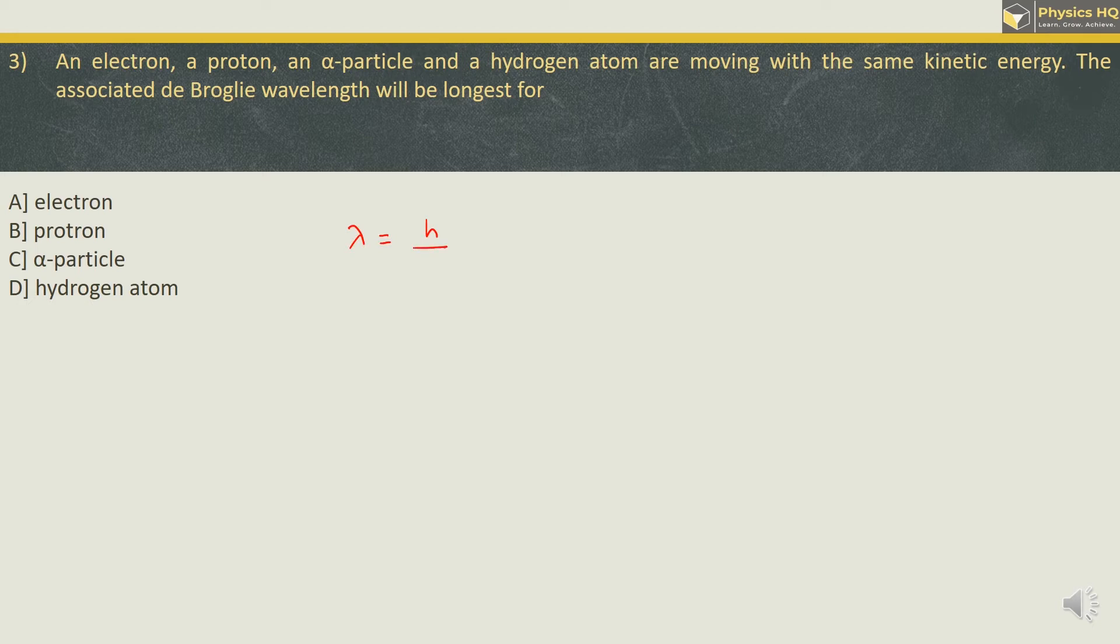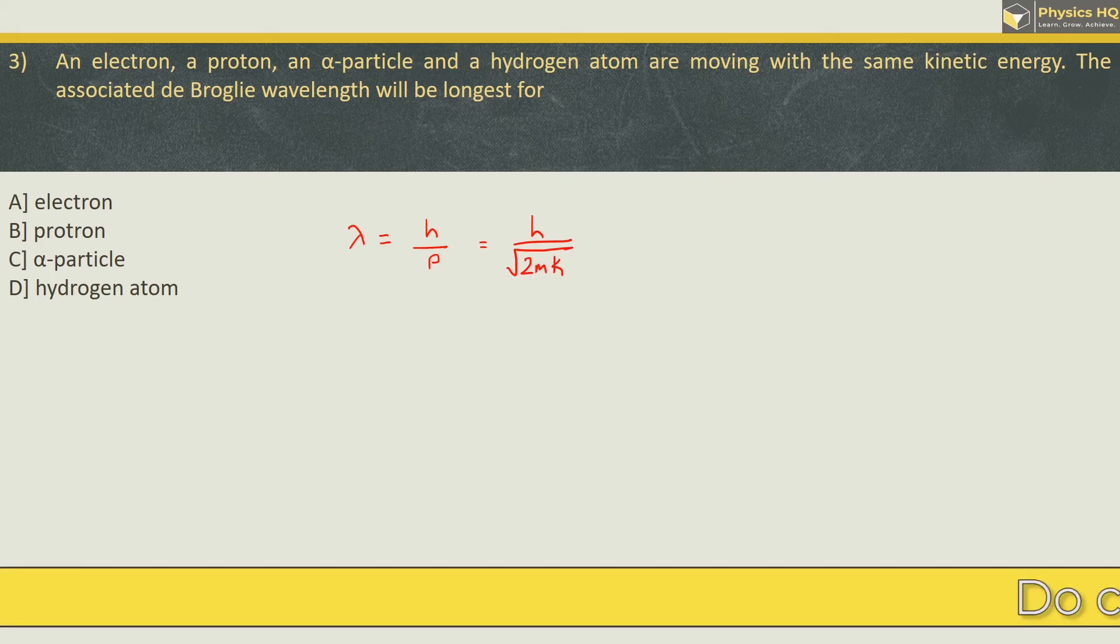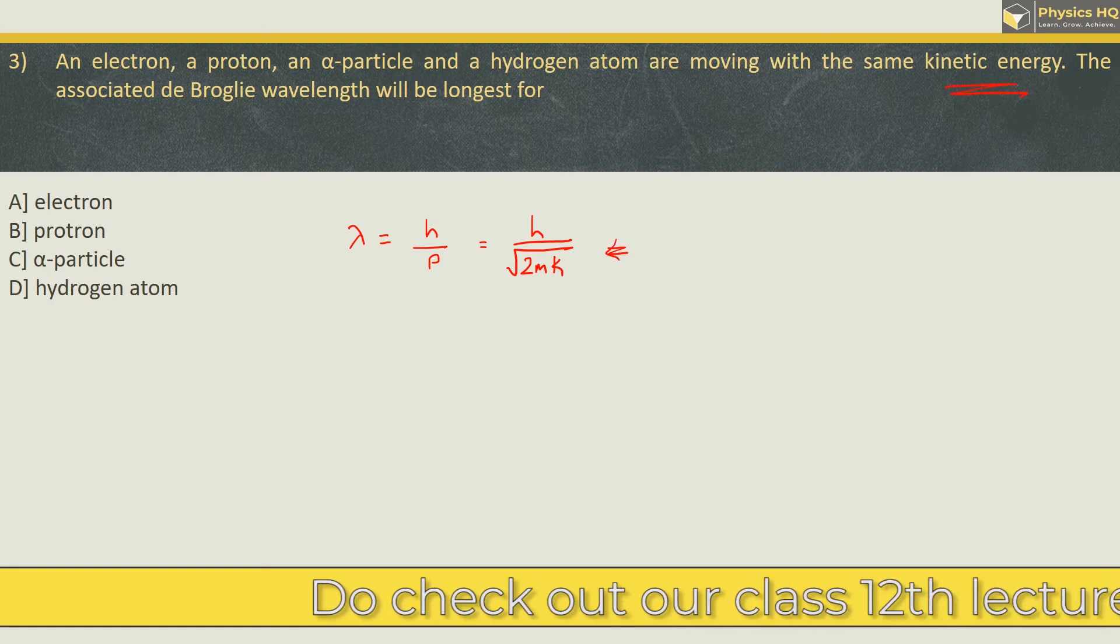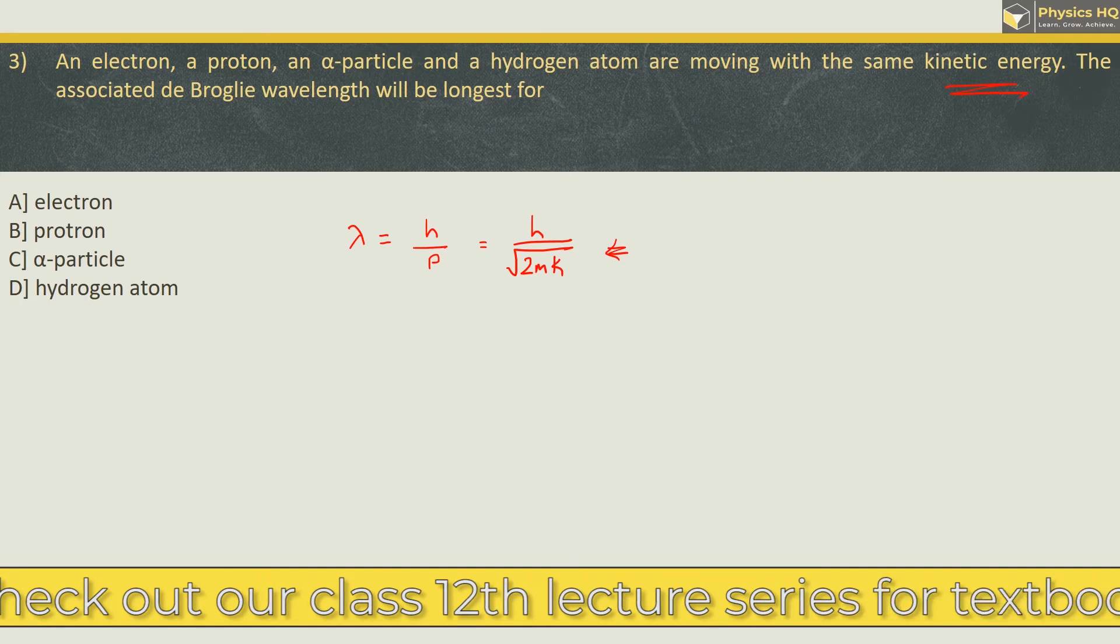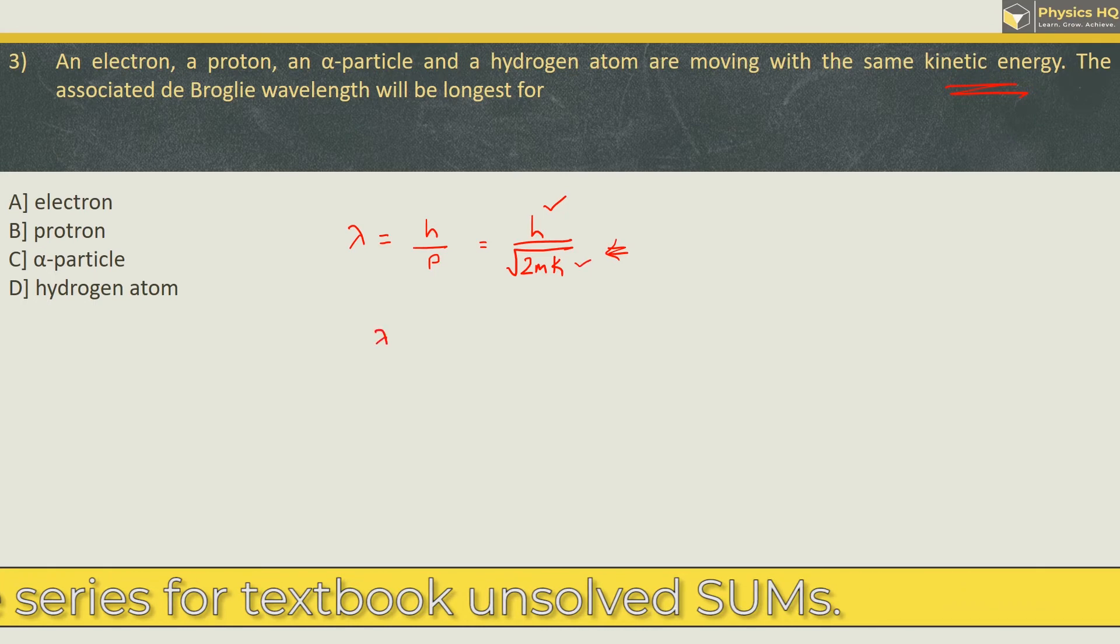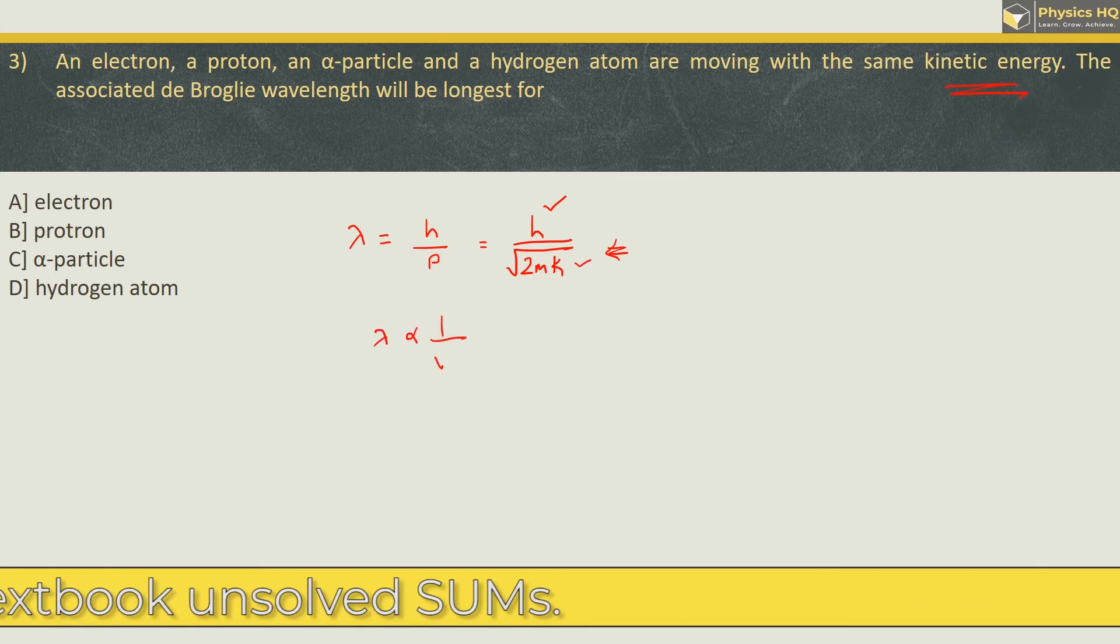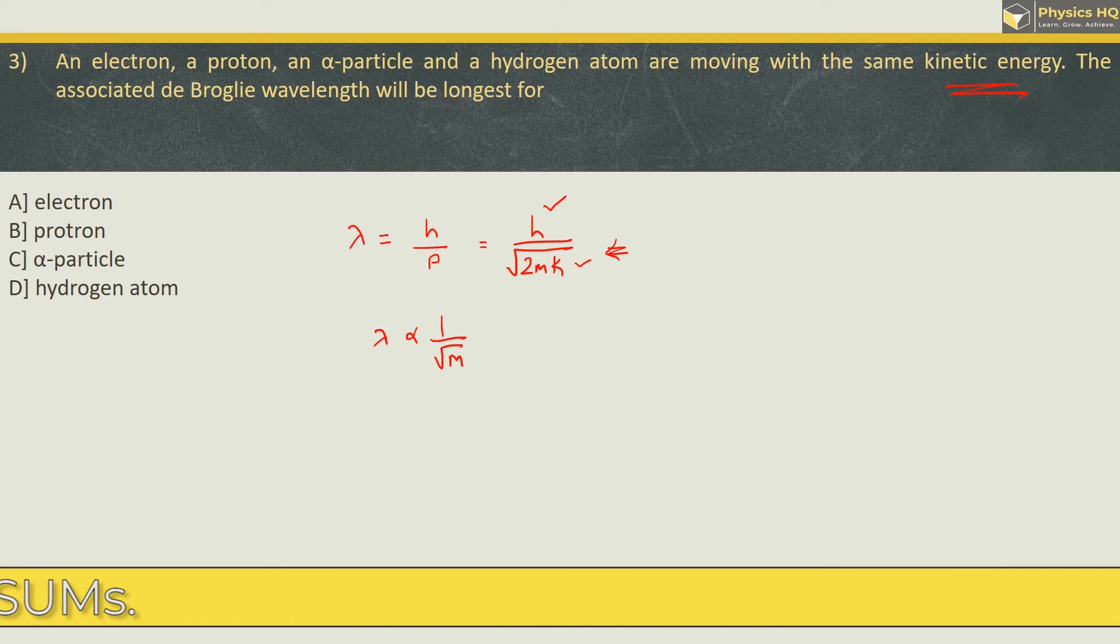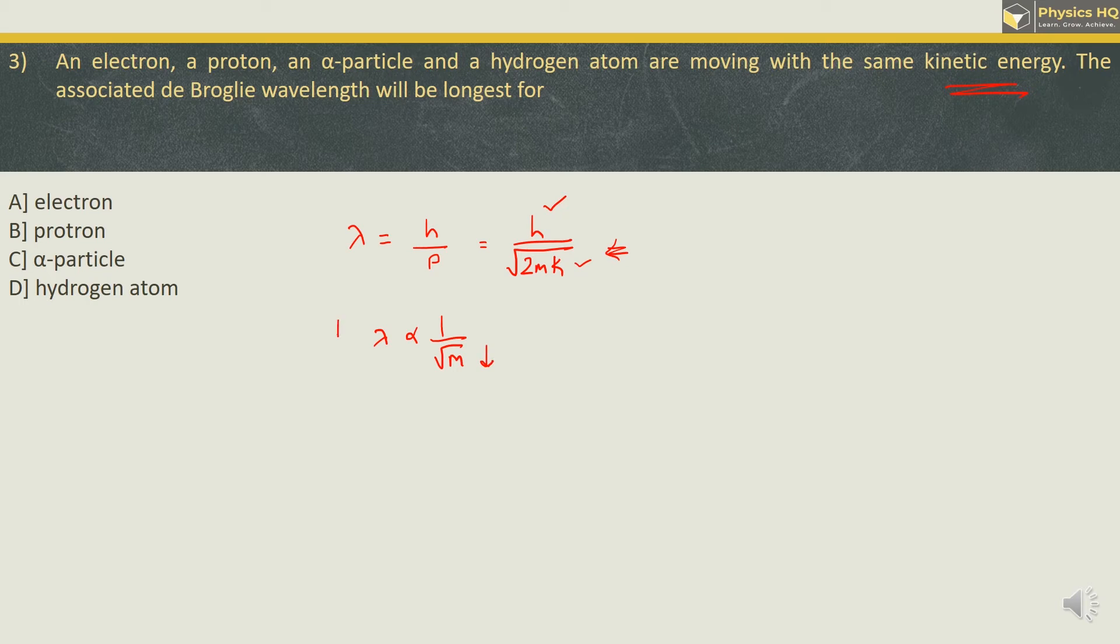Now the wavelength is given by h by p, which is momentum, which can also be written as root of 2m into k, where m is the mass and k is kinetic energy. We have used this formula because they have mentioned that all the particles are moving with the same kinetic energy. Now if you compare the wavelengths for all the particles, h is already constant which is Planck constant, kinetic energy is same. So we find that lambda is inversely proportional to the root of mass. And out of all the 4 options that we have, electron has the least mass and therefore the wavelength for it will be the longest. So the correct option is option A.